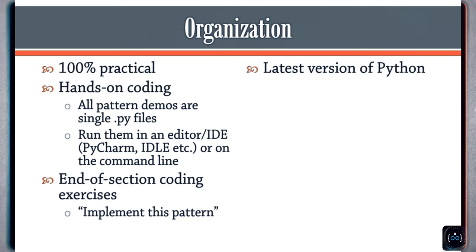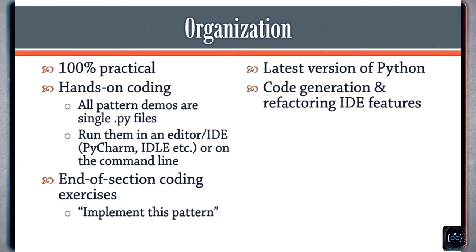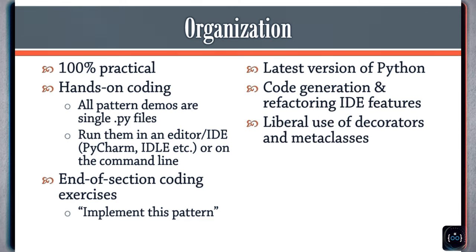So what do you need to understand all of this? I'm going to be using the latest version of Python, and if you want to follow the examples, I expect you to do the same — though you can modify things to work with Python 2.7. We're going to use plenty of code generation and refactoring. Since I'm using an IDE, you'll sometimes see me do automagical things like generating attribute assignments, so don't be surprised when chunks of code appear out of nowhere. I'll also make liberal use of whatever Python language functionality is available, whether decorators, metaclasses, or something else.